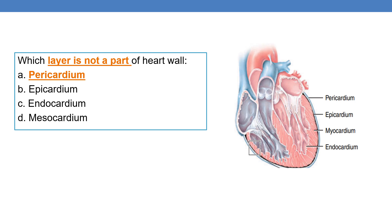Whereas epicardium is the outer layer of the heart wall, myocardium is the middle layer, and endocardium is the inner layer of the heart wall. These three are part of the heart wall, whereas pericardium is not a part of the heart wall.